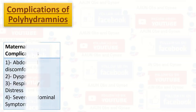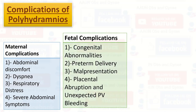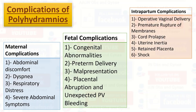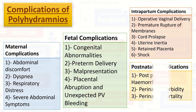This is the complete list of all the complications of polyhydramnios. The maternal complications include abdominal discomfort, dyspnea, respiratory distress, and severe abdominal symptoms. The fetal complications include congenital abnormalities, preterm delivery, malpresentation, placental abruption, and unexpected PV bleeding. Intrapartum complications include operative vaginal delivery, premature rupture of membranes, cord prolapse, uterine inertia, retained placenta, and shock. The postnatal complications include postpartum hemorrhage, perinatal morbidity, and perinatal mortality.